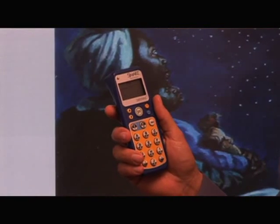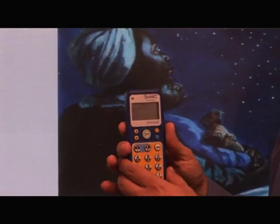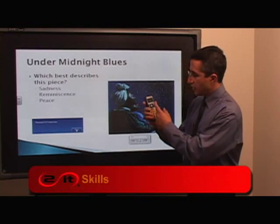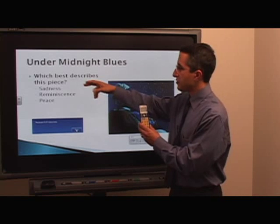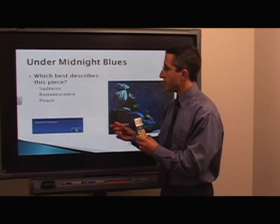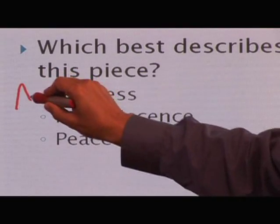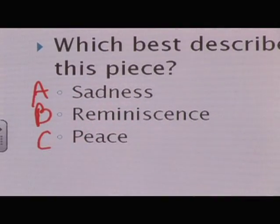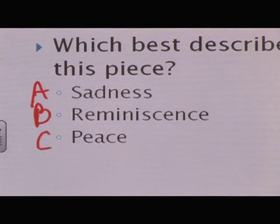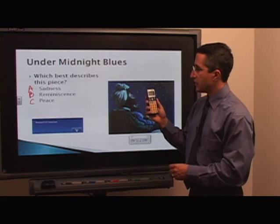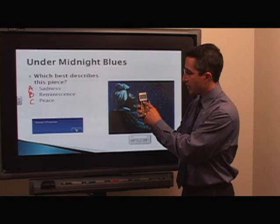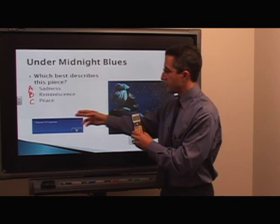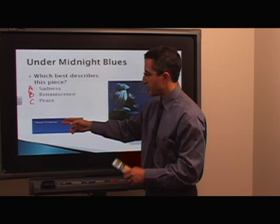I already have these clickers signed in as different students. I'll click Start and it will begin collecting responses. The response system shows one question set with answers A through C, but those letters aren't written on the slide yet. So I can pick up my pen and write A, B, and C so students can identify which answers correspond to which responses. I'll hit the C response on a clicker and press Enter — the box shows it has received one of three responses.